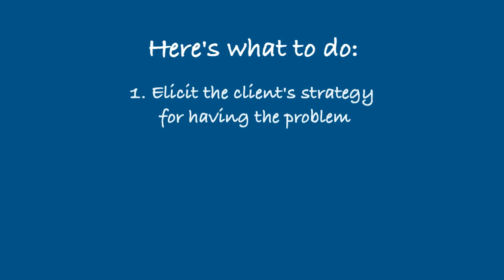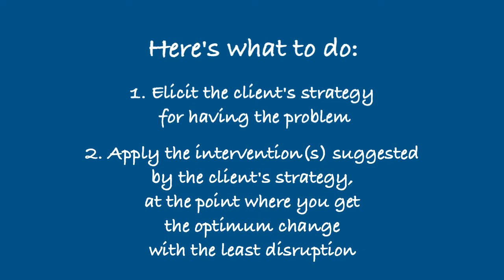Please take as read the usual conditions for effective therapy, such as maintaining yourself in a positive state, rapport, paying attention to the client, and having the client's best interests at heart. Step one: elicit their strategy for having the problem — find out how they're doing it, step by step. Step two: apply whatever interventions are suggested by the client's strategy, at the point in the strategy where intervening will have the most positive effect for the least effort and disruption. If you've done step one properly, it will be obvious what interventions to use and where to apply them.